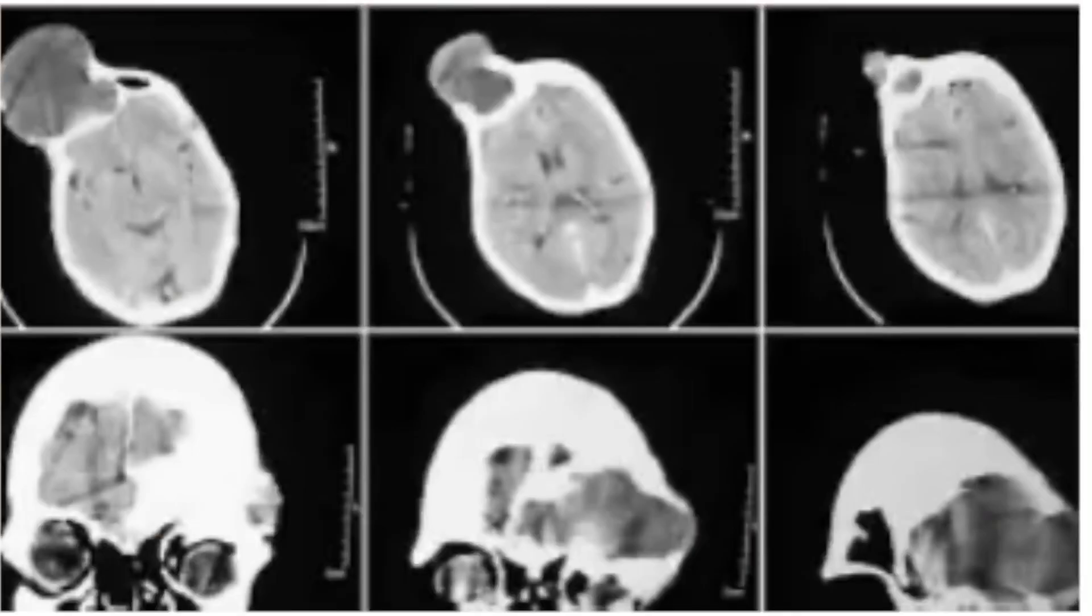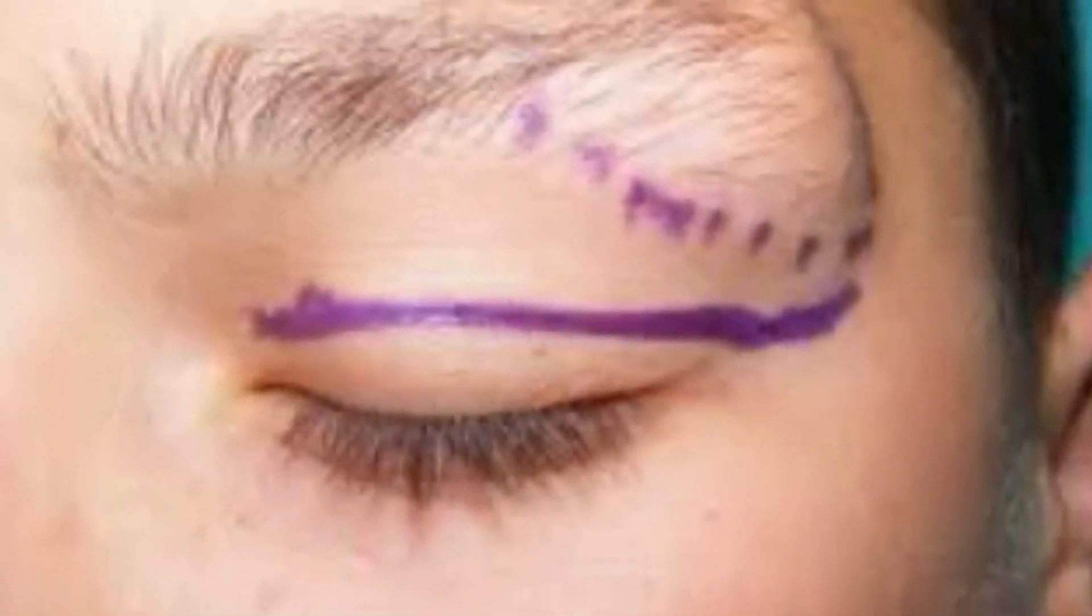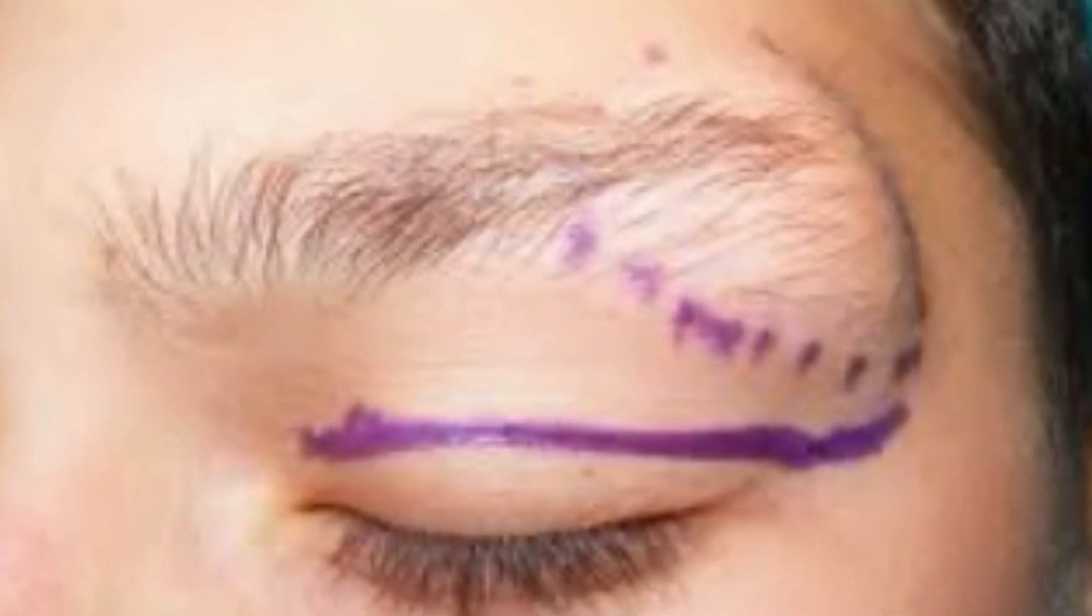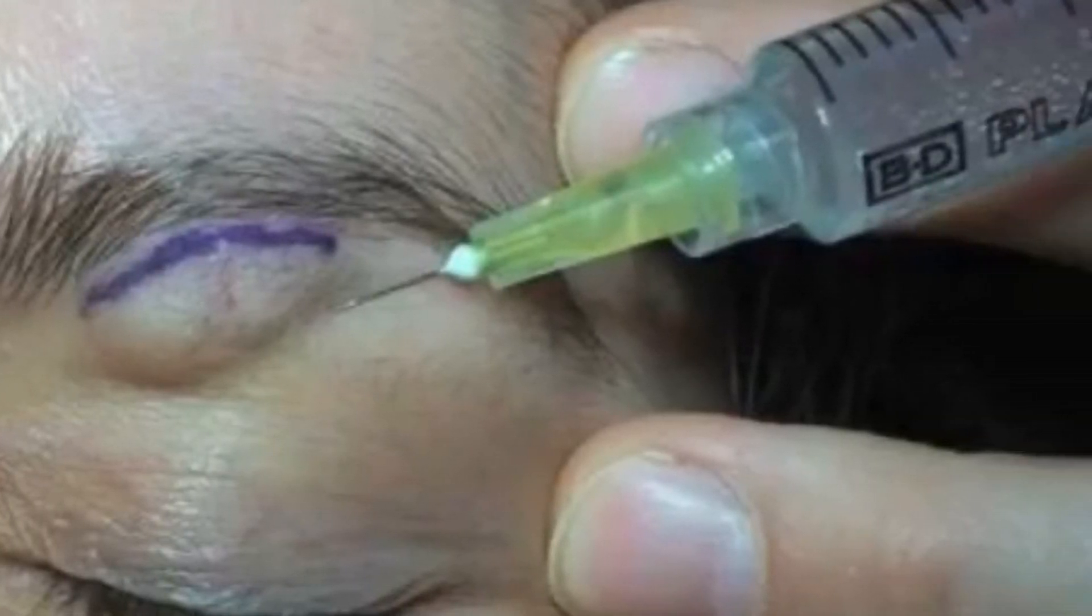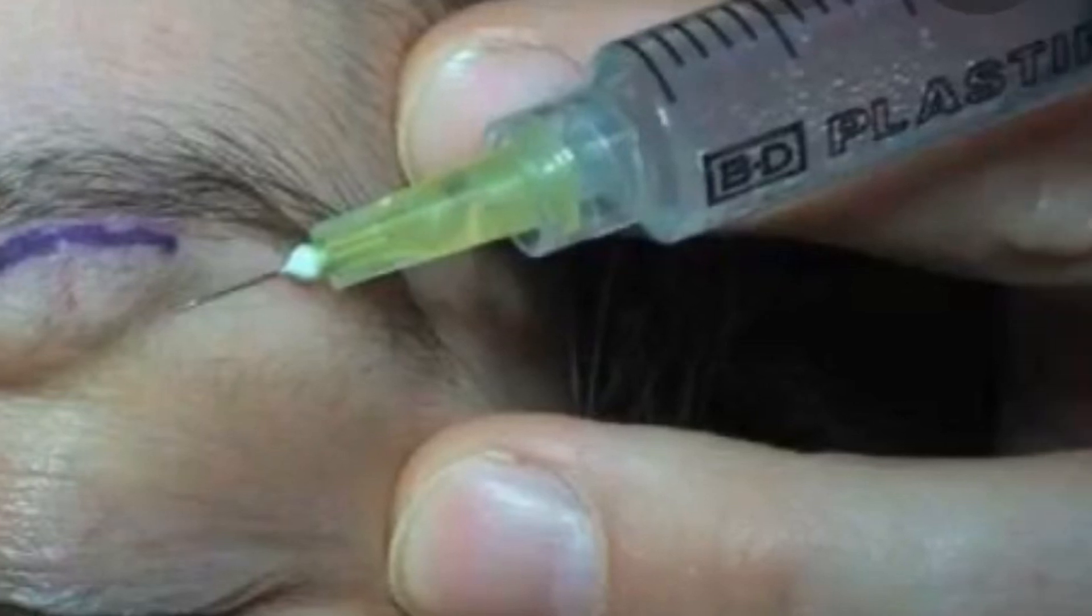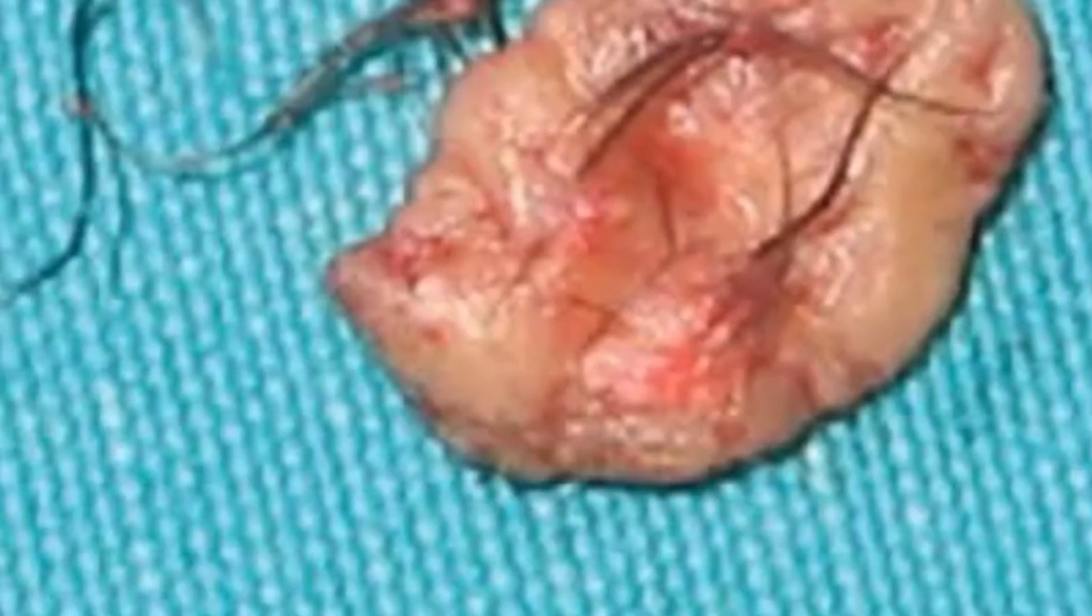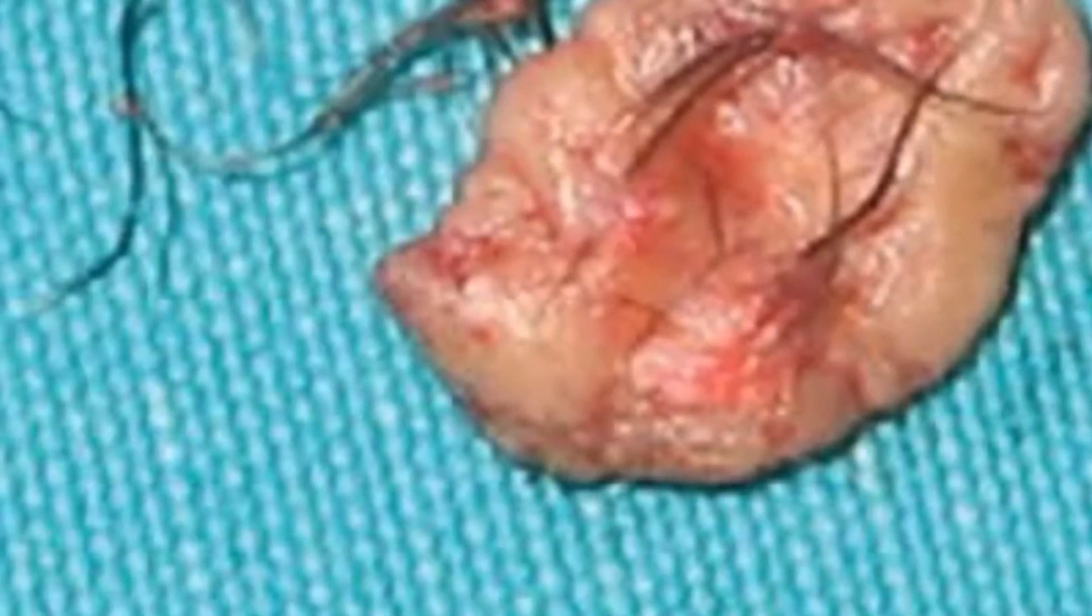Complete excision of the cyst is the treatment of choice. It should be done with a single incision along Langer's line if the cyst is small.